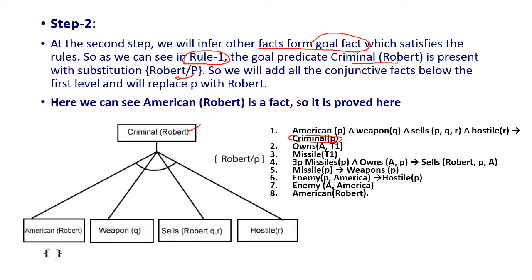We then add all the conjunctive facts from rule 1: American(p) ∧ Weapon(q) ∧ Sells(p, q, r) ∧ Hostile(r). Replacing p with Robert throughout gives: American(Robert) ∧ Weapon(q) ∧ Sells(Robert, q, r) ∧ Hostile(r). Here we can see that American(Robert) is already proved.